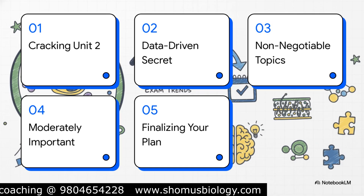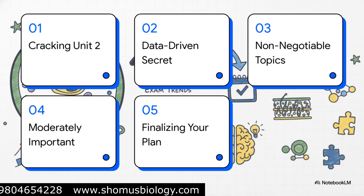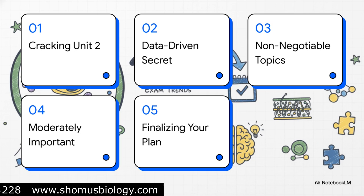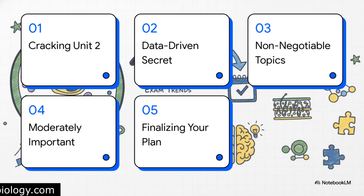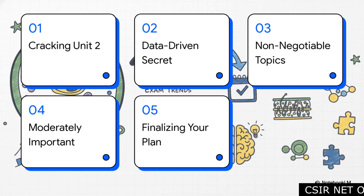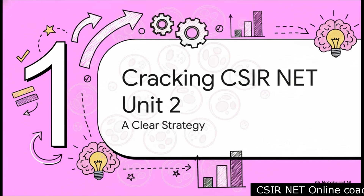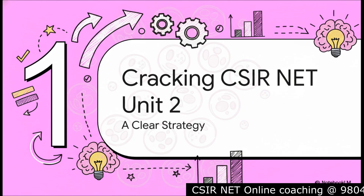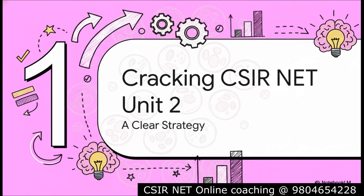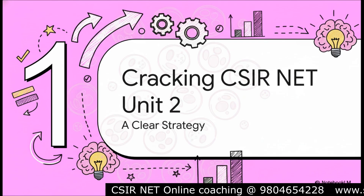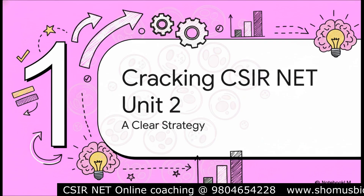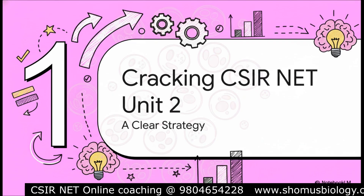Here's our game plan: first, we're going to tackle the challenge of Unit 2 head-on. Then I'll let you in on the data-driven secret to studying smart. After that, we'll dive deep into your non-negotiable must-know topics and the moderately important ones. And to wrap it all up, we'll build your personal study blueprint so you can walk away ready to go. Unit 2 is massive, and a really common trap is trying to master every single little topic. Our goal here isn't to study harder — it's to study smarter, focusing energy where it gets the highest results.